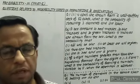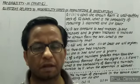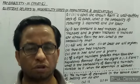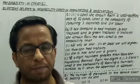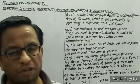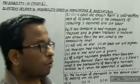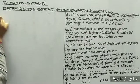Hello everyone. In this Part 5 of probability, we are going to solve questions related to probability based on permutations and combinations. So let's start with question number 1a.